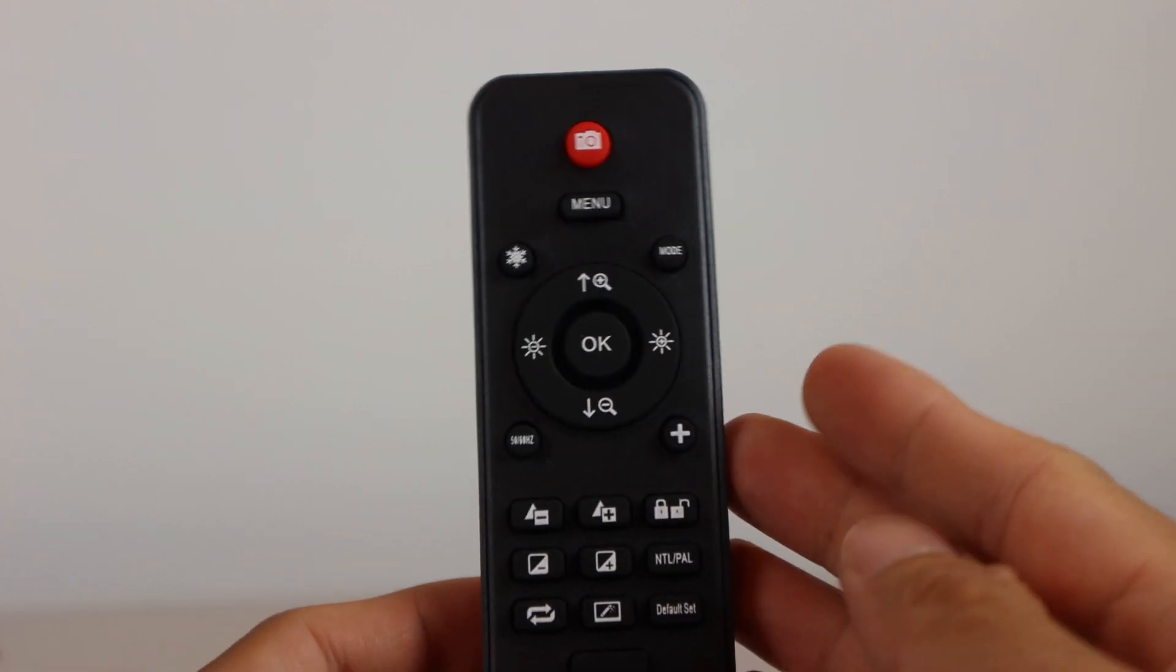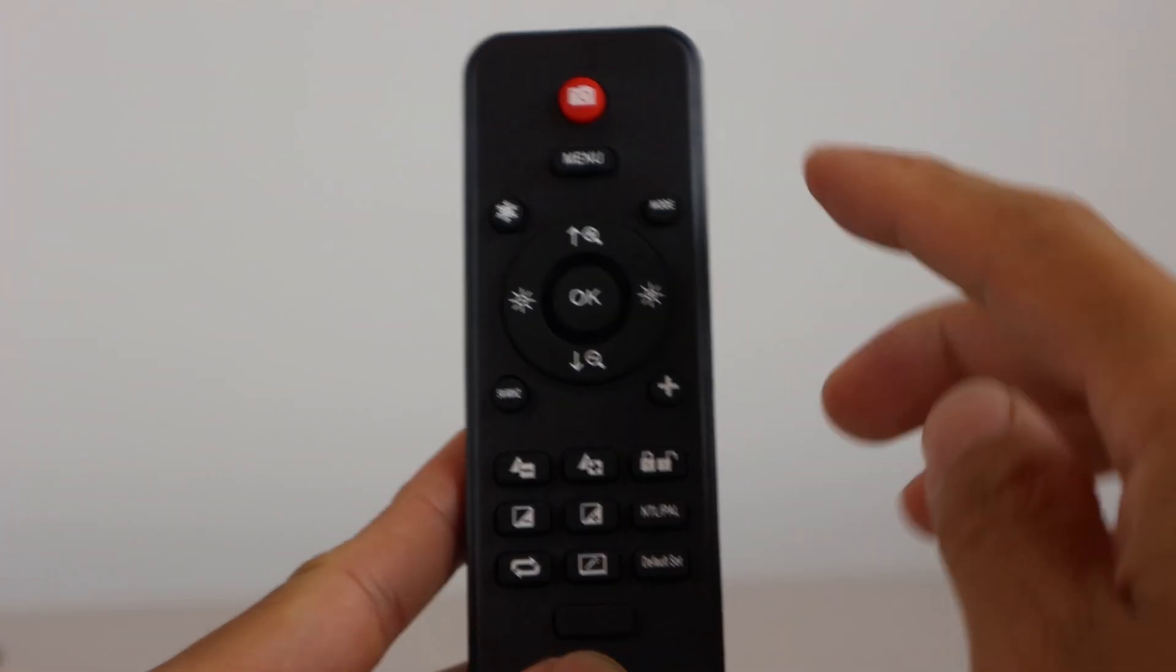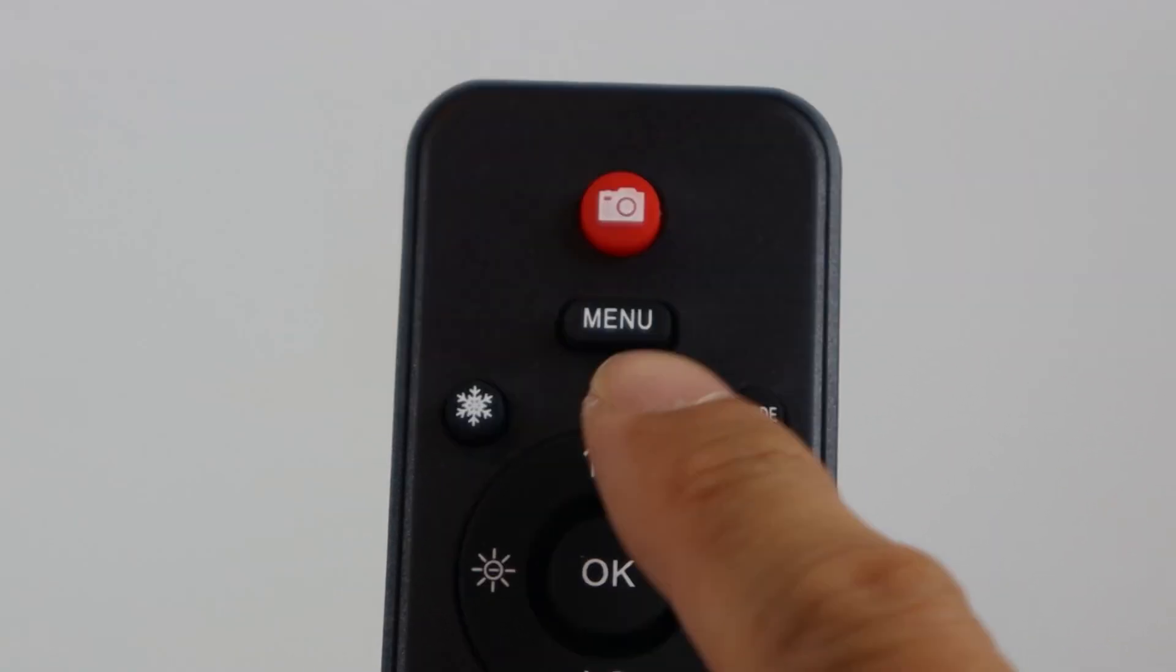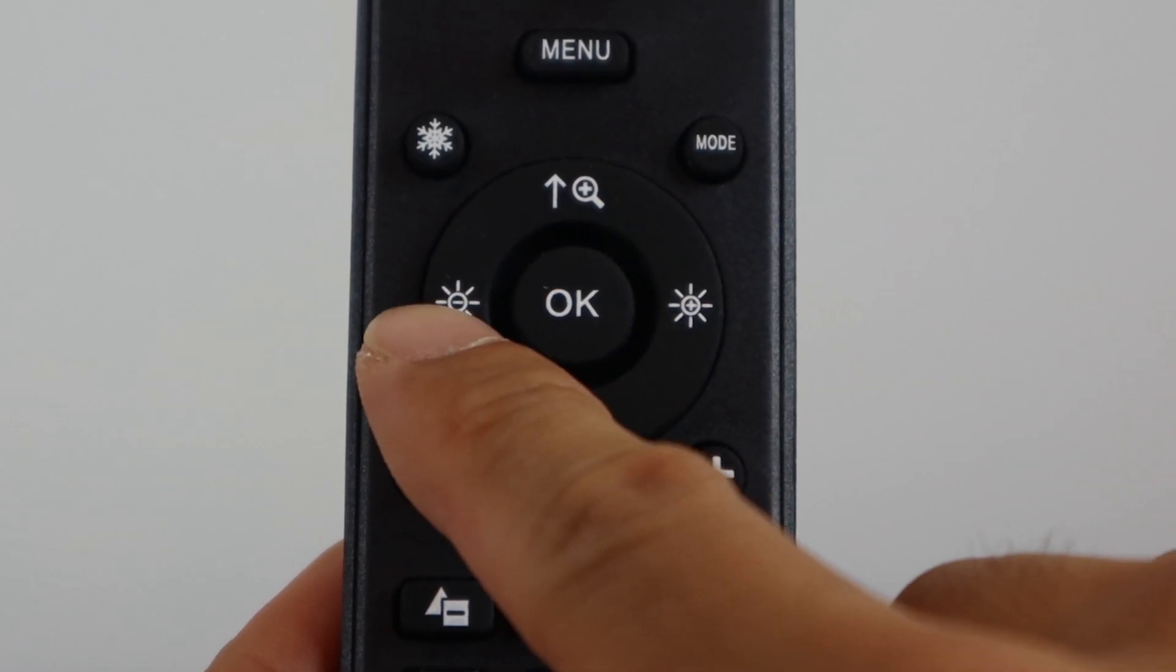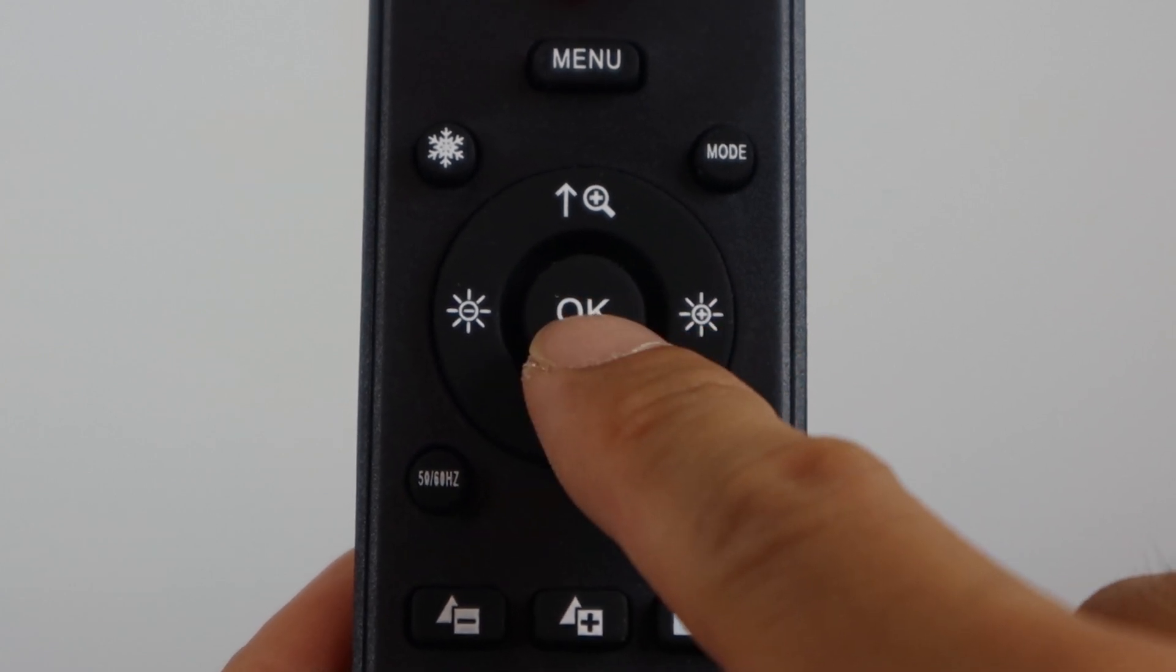The remote control has more options than the physical buttons. You've got a photo button, menu key, video freeze, mode, zoom in and out, exposure adjustment, and OK button.